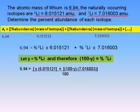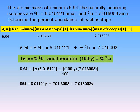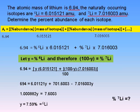Substituting into our equation, we have 6.94 equal to the abundance y times its isotopic mass plus (100 minus y) times the other isotopic mass. Multiplying through and collecting all the y terms on one side, then dividing through, we get the abundance of the lithium-6 isotope as 7.59%. It then follows that the abundance of the lithium-7 isotope is 100 minus 7.59, which gives 92.41%.